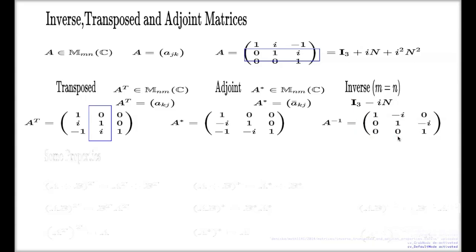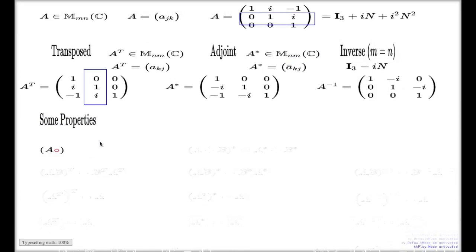So the purpose of this slide is to give you some basic properties which connects these three constructs: transposed, adjoint and inverse. Here they are. Some basic ones. For instance, when you add two matrices and you take a transposition, this will be equivalent to taking the transposition of individual terms and then add them together. Similar goes true for adjoint.